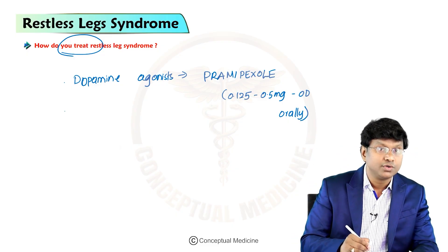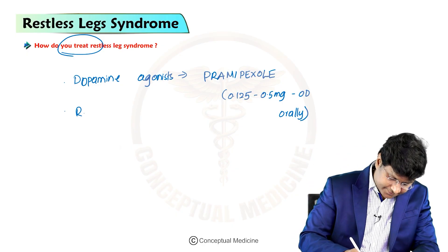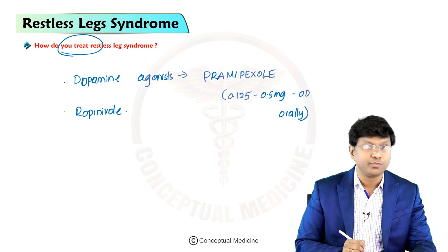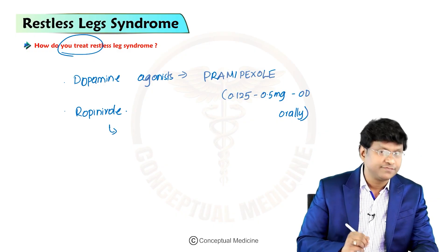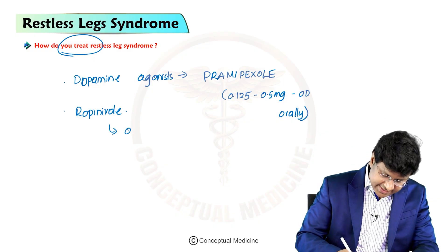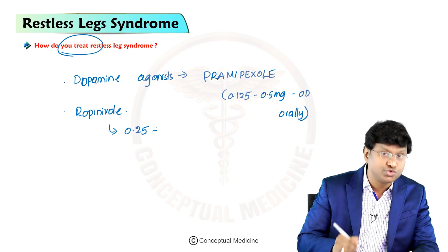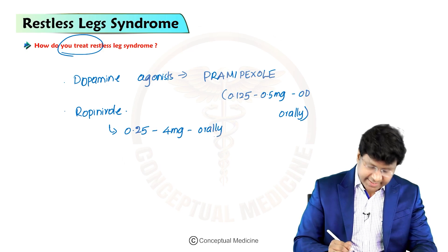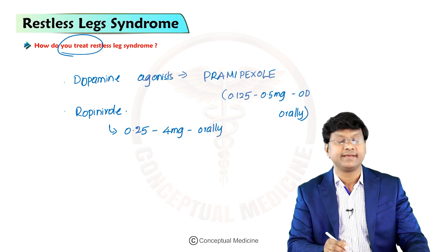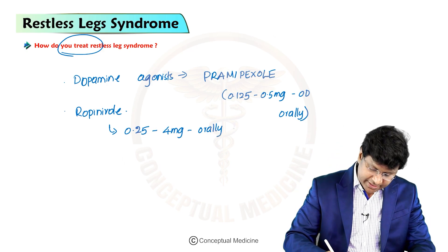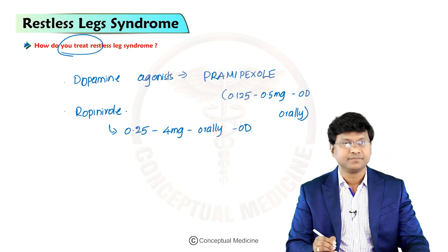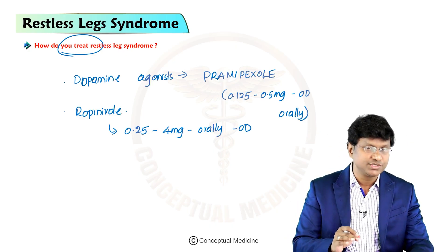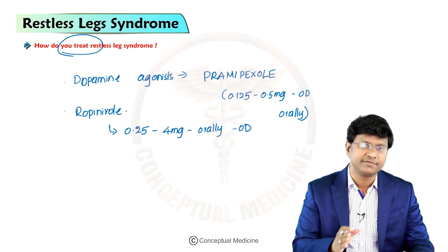We also have another drug called ropinirole. The dosage of ropinirole is 0.25 to 4 milligrams orally, given once daily. Ropinirole is usually taken 2 to 3 hours before bedtime.